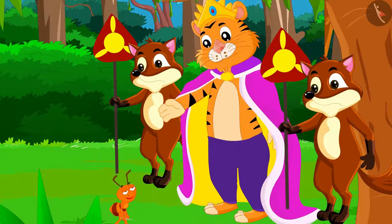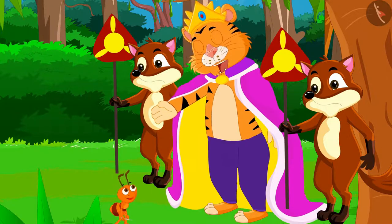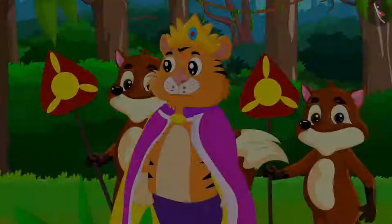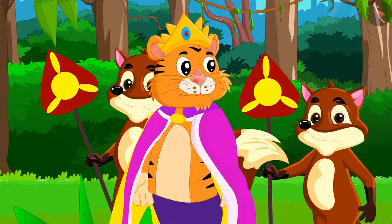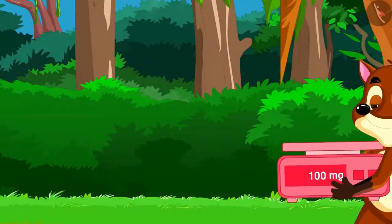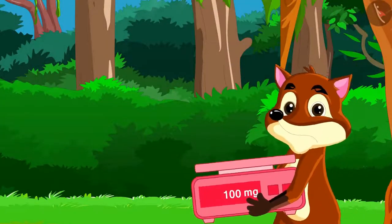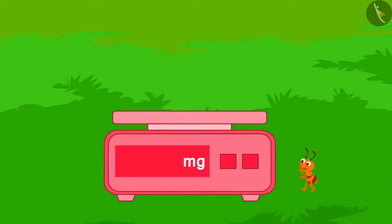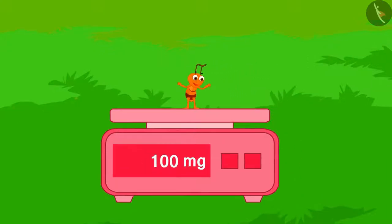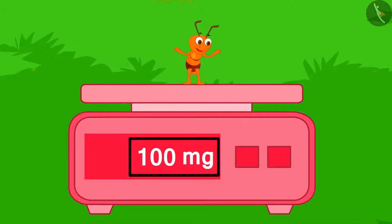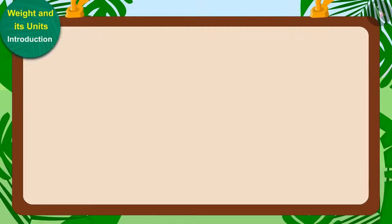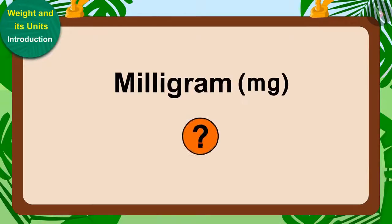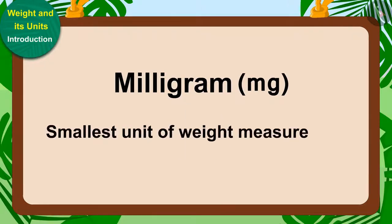The king laughed and said, weight tells you how heavy an object is. The king immediately asked for a weighing scale. When the ant stood on that weighing scale, its weight showed as 100 milligrams. Kids, do you know what milligram is? Milligram is the smallest unit of weight measurement.